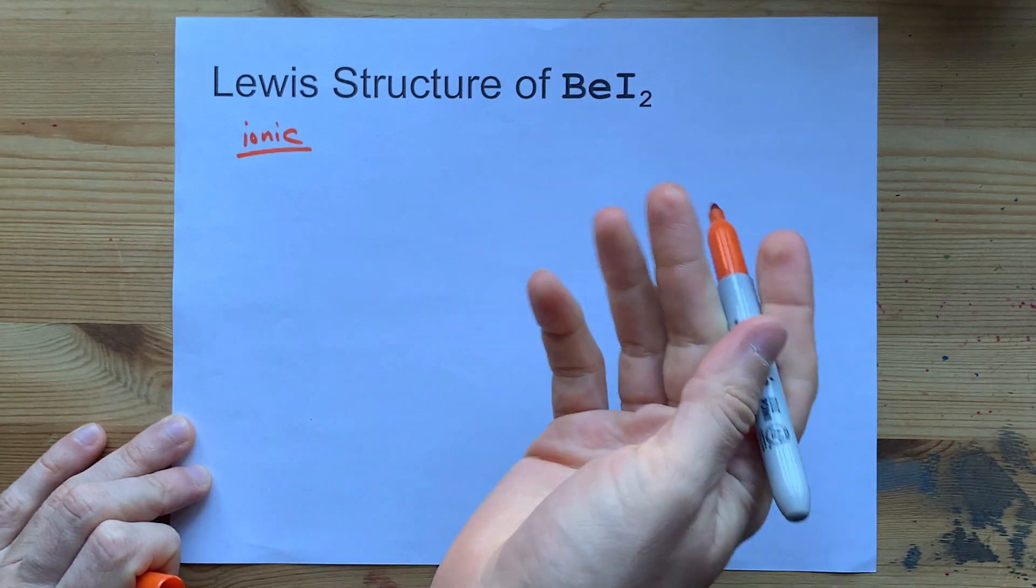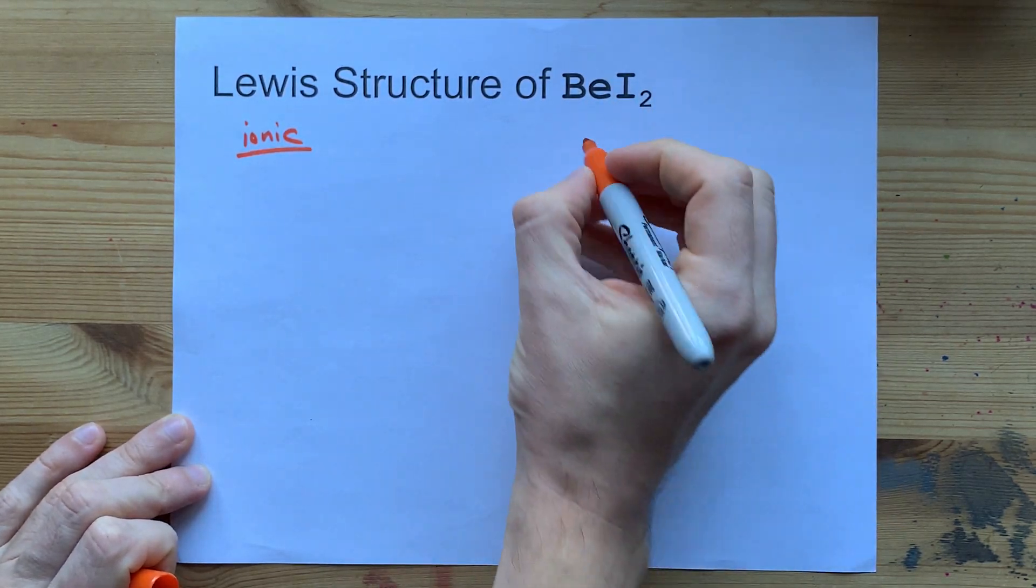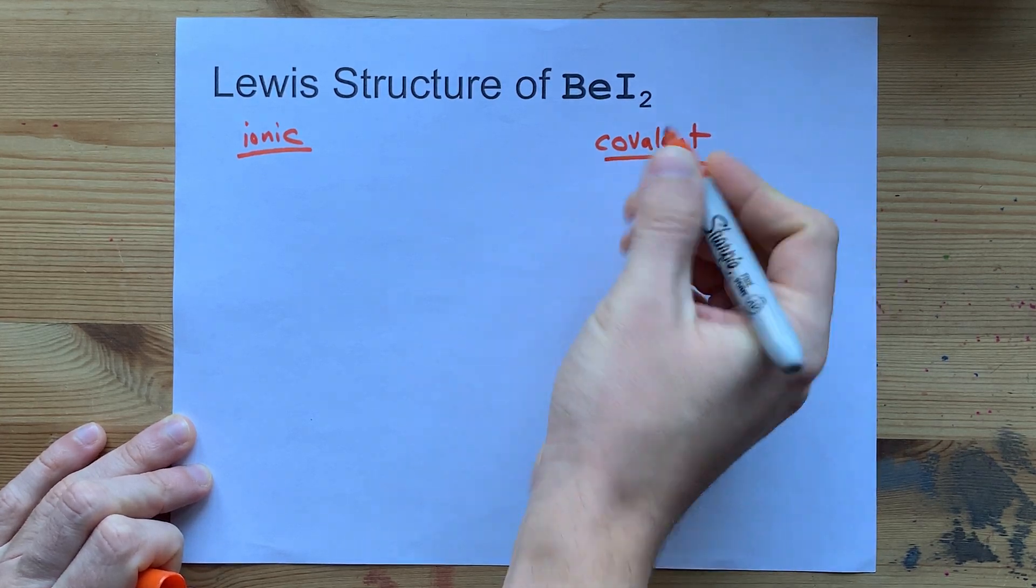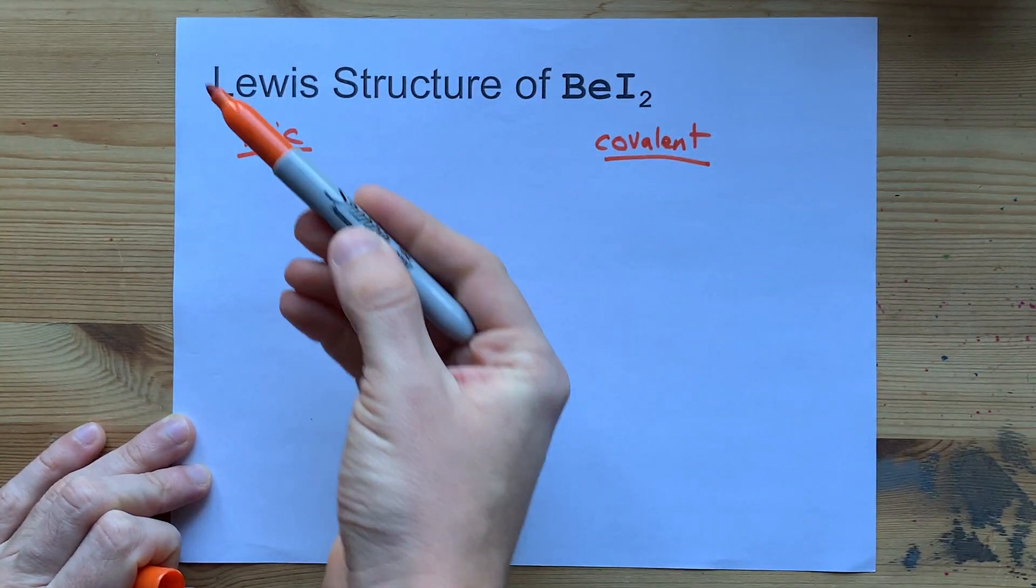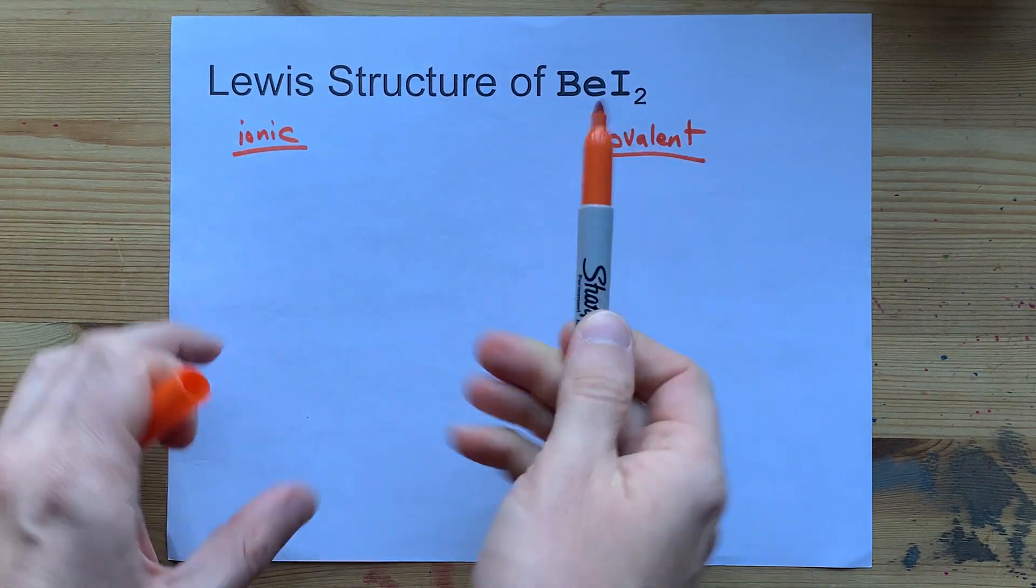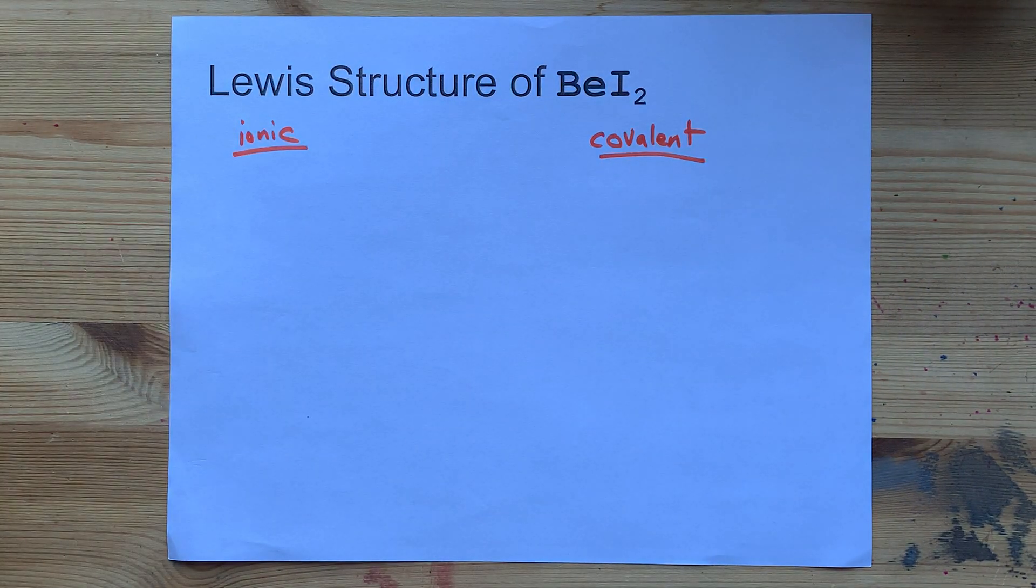But it turns out that the way these two atoms bond together, they end up sharing electrons, so it's actually covalent. I'm going to draw the ionic structure first, because I'm guessing it's what your teacher wants, but then I'm going to show you what it actually is.